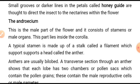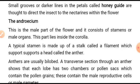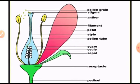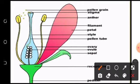Small groups of darker coloring in the petals called honey guides are thought to direct insects to the nectars within the flower. The androecium is the male part of the flower and consists of stamens or many organs. It lies inside the corolla, and the typical stamen is made up of a stalk called the filament which supports a head called the anther.